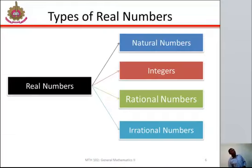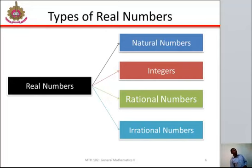Now, from your previous study, you must have learnt about different types of real numbers. Let me refresh your memory by discussing the various types. We have natural numbers — these are a set of numbers like 1, 2, 3, 4, and so on and so forth. These numbers are used extensively for counting processes.